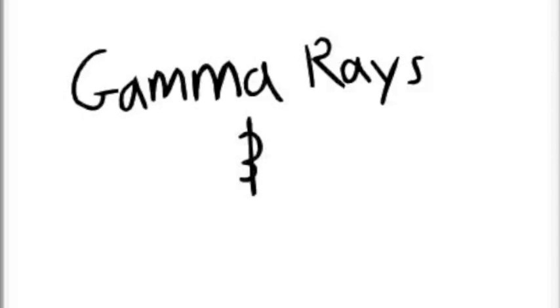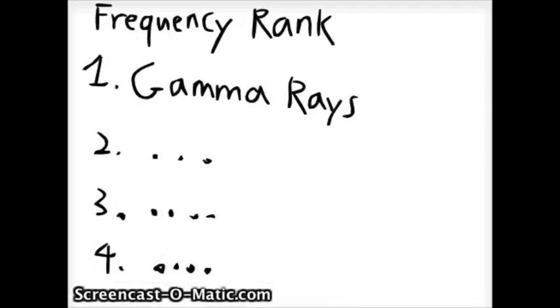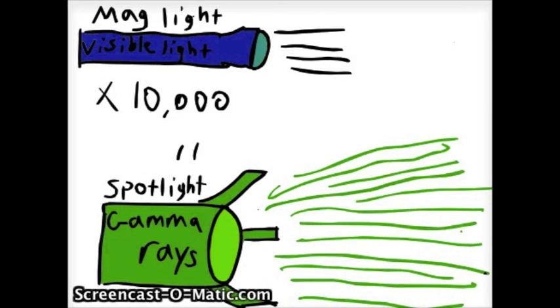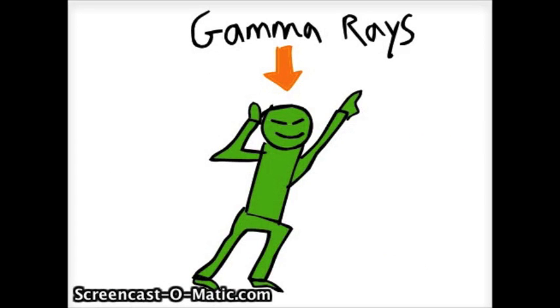Okay, now let's get to the gamma ray and Hulk point. Gamma rays have the highest frequency and they have the shortest wavelength compared to the others in the EM spectrum. They are actually at least 10,000 times stronger than a visible light ray. It's like comparing a small flashlight and a theater spotlight.